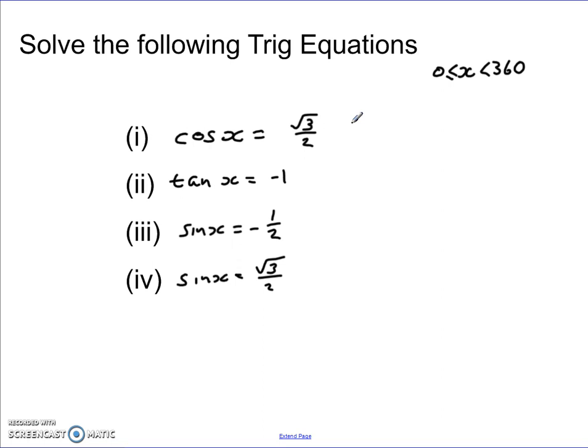I had cos x is root 3 over 2, tan x is negative 1, sin x is negative 1 half, and sin x is root 3 over 2. These are all things you should hopefully manage from National 5. Nice refresher for you. So here we go.